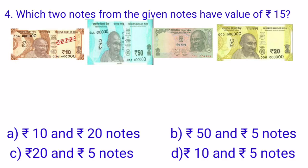This is the fourth question for today's lesson. Which two notes from the given notes have a value of Rs. 15? We have to find the notes having the value of Rs. 15. We are given 4 different currency notes, and we will move to the options turn by turn.